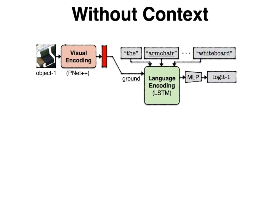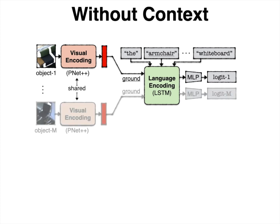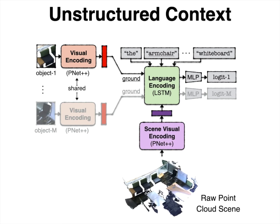We next consider how to create a neural network that predicts a compatibility score between the input utterance and every object of a scene. Given a 3D object, we extract its visual feature and use it to ground a language encoder that processes the input utterance. We repeat this step for all objects in the scene and use an MLP classifier to predict the target given its individual derived representation. This is a context-free neural listener that does not explicitly consider interactions among the objects of the scene. A simple improvement is to additionally provide a feature extracted from the entire 3D scene in an unstructured manner, which does not explicitly take into account individual object instances.